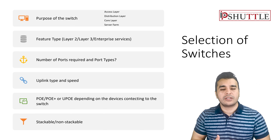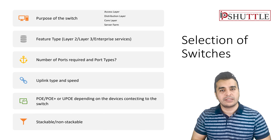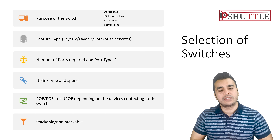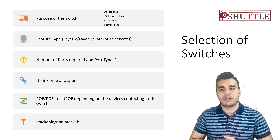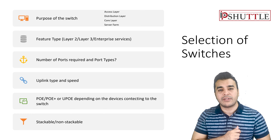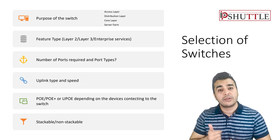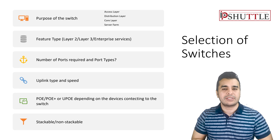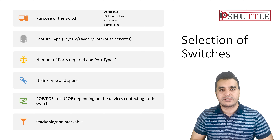The last consideration is whether you need stackable devices or standalone devices. Once you have all this information it is easy to select the right switch — for example, 2960, 9500, or a Nexus series depending on placement. We will have a separate lecture on network design.